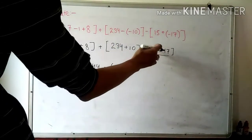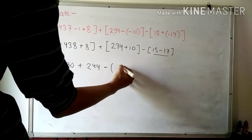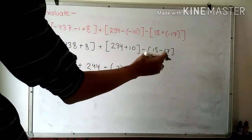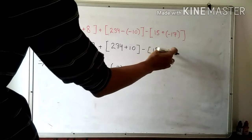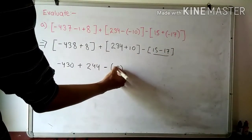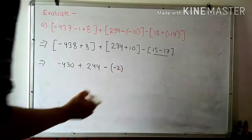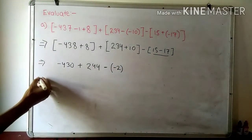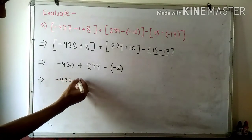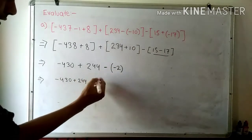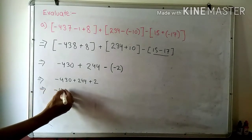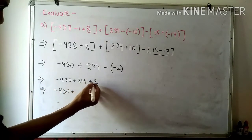Whenever one number is positive and the other is negative, subtraction takes place. So we subtract the digits. When we subtract, we place the symbol of whichever digit is larger. In both cases, 17 is the largest number and its symbol is minus, so we put the minus sign in front of 2. Now: minus 430 plus 244 minus into minus becomes plus 2, giving us minus 430 plus 244 plus 2.